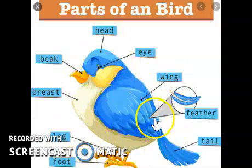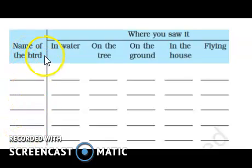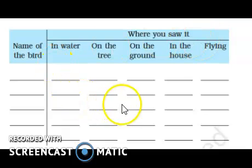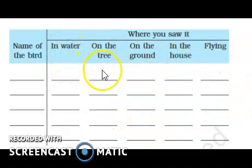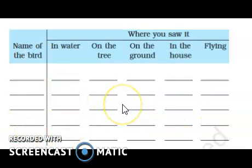I hope you understood the characteristics of birds. Okay, so this is your book's page, which has the exercise. You have to write the names of birds you have seen. So I am sure you will see birds listed here. You have to write the name of birds and where you have seen them — in water, on tree, on ground, in house, or flying — and tick accordingly.